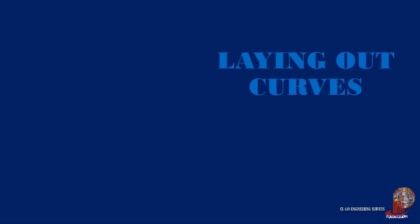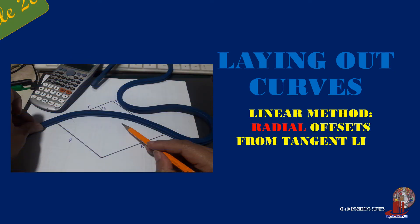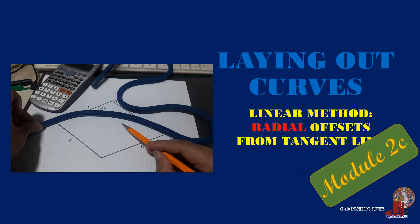Another curve-laying method using the tangent line is through radial offsets. Still the same, this method can be used for small and important curves. Learn about the procedure here in engineering surveys.